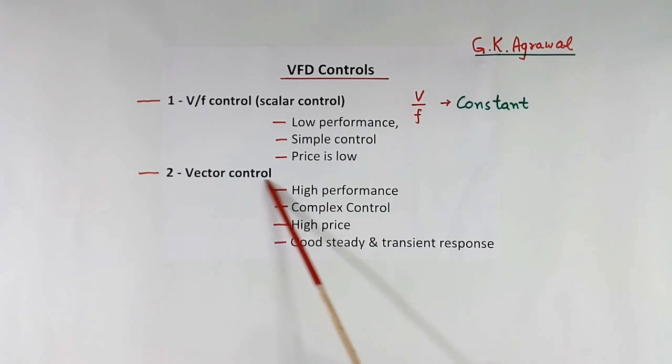Second is vector control. These are used in train engines nowadays. They are high performance. They have very complex control. Price also very high, and good steady and transient response. When motor speed is changing, we call it transient. When motor speed is steady, we call it steady. In both conditions, this vector control system gives good response.